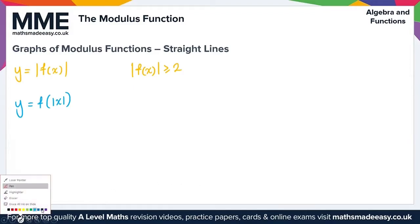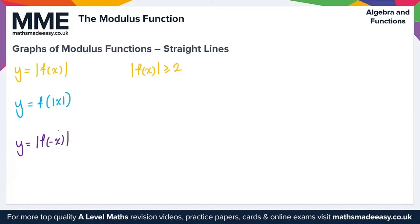The final type is y equals the modulus of f of minus x. Here the x values swap sign — from positive to negative or vice versa. The graph of f(x) is reflected in the y-axis, and then all negative values of f(x) are made positive by reflecting the negative section in the x-axis. The range is restricted as with y equals the modulus of f(x). The best approach is to plot y equals f(x) first, then reflect in the appropriate axes.